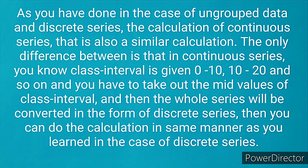As you have done in the case of ungrouped data and discrete series, the calculation for continuous series is also simpler. The only difference is that in continuous series, a class interval is given such as 0 to 10, 10 to 20, and so on. You have to find the mid values of each class interval, converting the series into the form of a discrete series, and then do the calculation in the same manner as learned for discrete series.